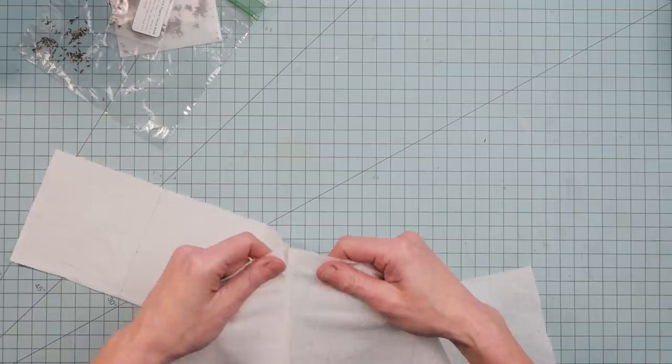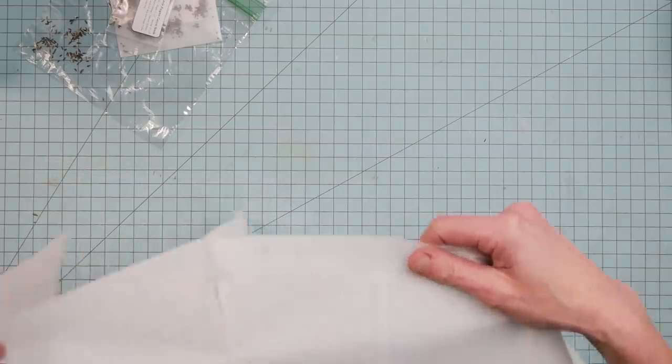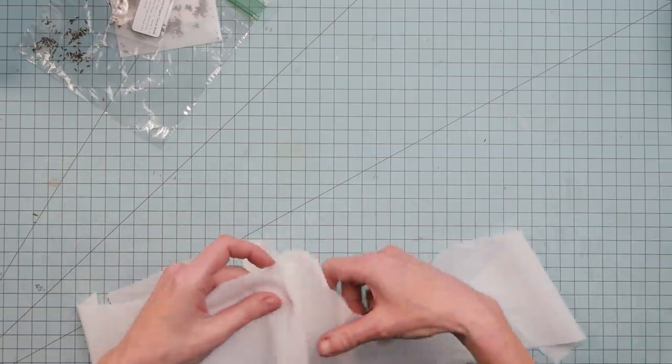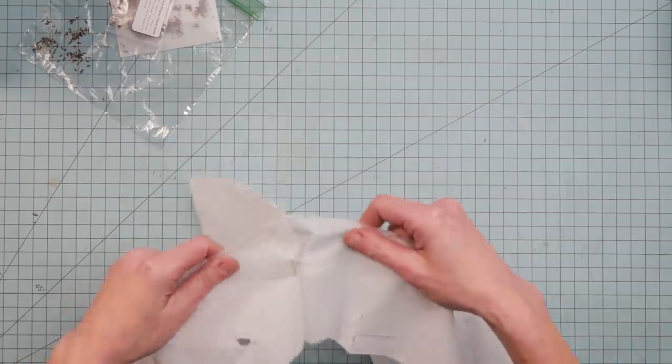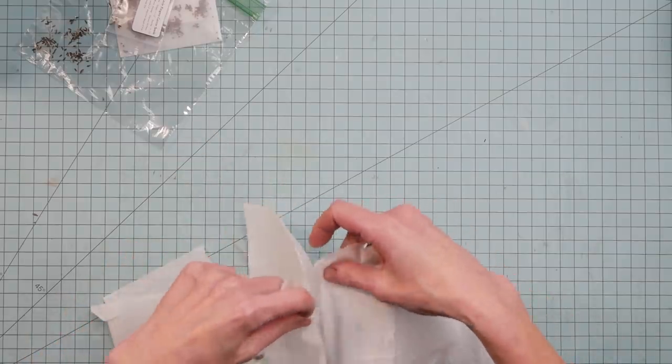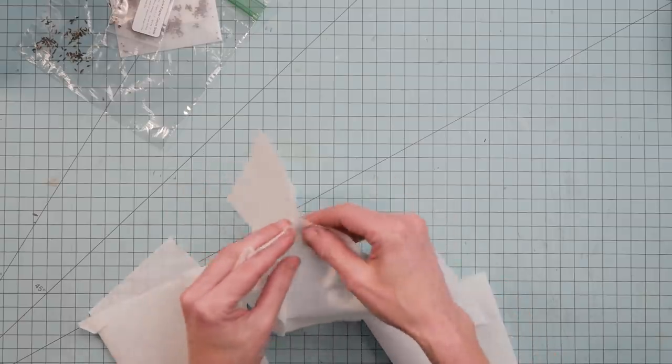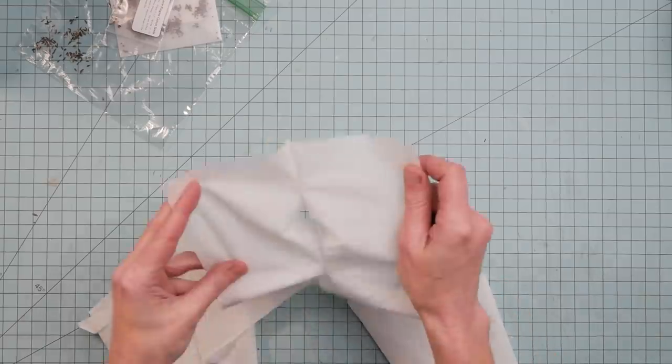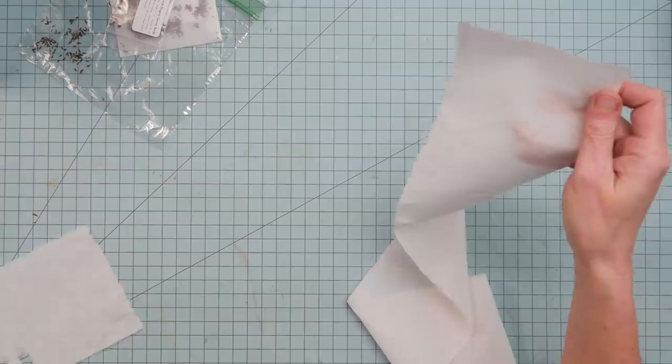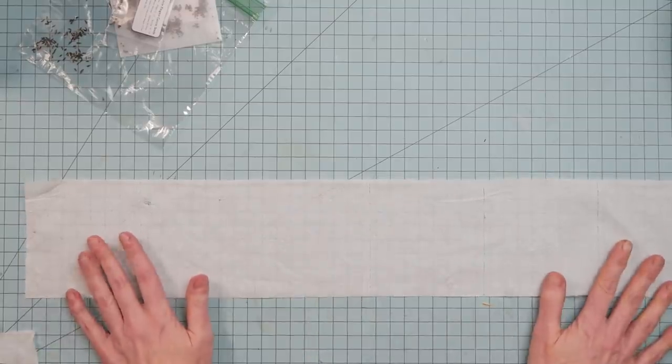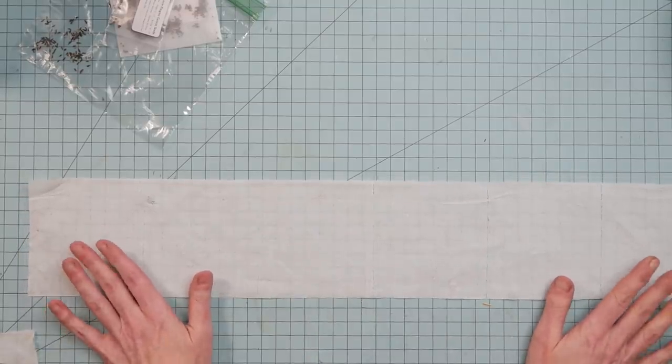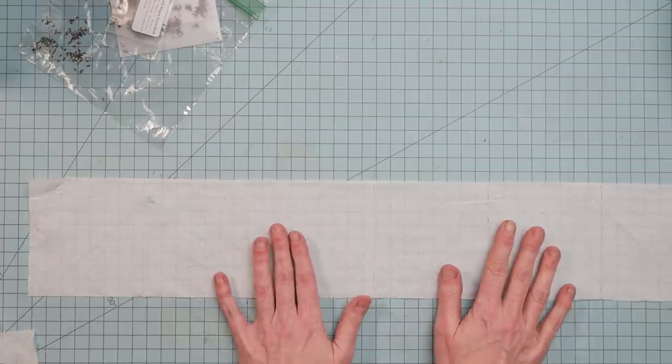Some people use paper towels. I usually just use toilet paper. You can also use tissues, like Kleenex tissues, as long as they're not like Puffs Plus with lotion. Just something thin that will disintegrate is what you want. I'll be able to do several rows here, probably four rows, but I'm not going to cut it apart yet.